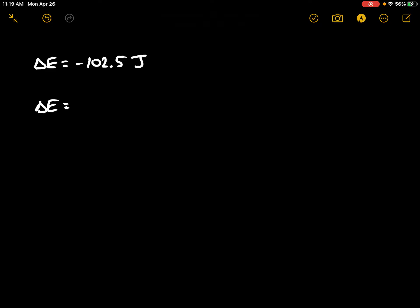Delta E is equal to Q plus W, and we know that W is equal to the work, so this is equal to Q plus negative P delta V.